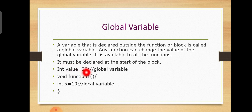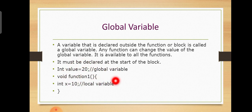The value is equal to 20 — the global variable is set. The void function is start, and the index is equal to 10, which is the local variable. The function demonstrates both a local variable and a global variable.